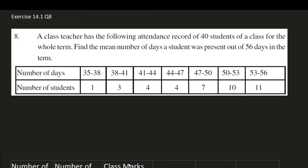Now let us see question number 8 of exercise 14.1. A class teacher has the following attendance record of 40 students of a class for the whole term. Find the mean number of days a student was present out of 56 days in the term.